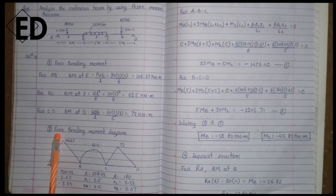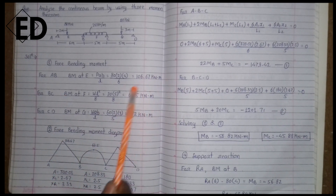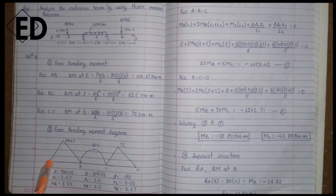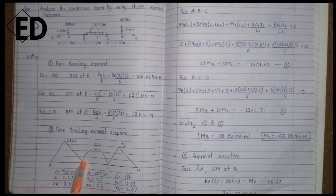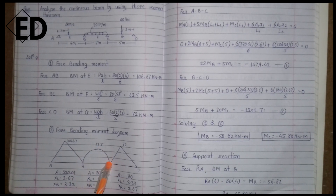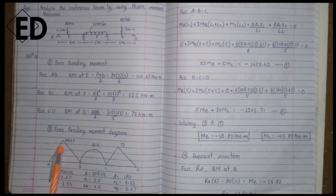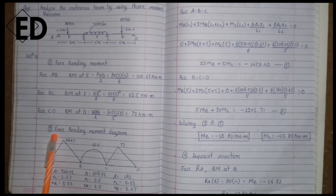The second step is drawing the free bending moment diagram. The bending moments we calculated are plotted in the diagram. For span AB there is a point load, so the diagram is a triangle. For span BC there is a UDL, so it is a parabola. For span CD there is a point load, so it is a triangle again.